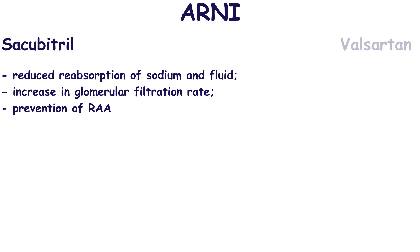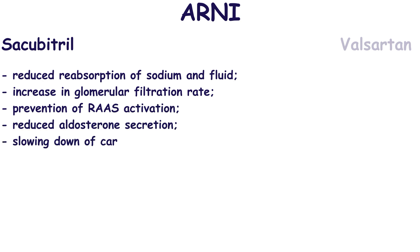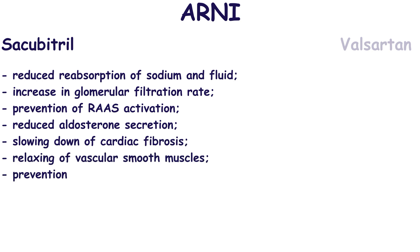Also, these peptides result in the dilation of afferent glomerular arterioles and constriction of the efferent glomerular arterioles, leading to an increase in glomerular filtration rate. Natriuretic peptides inhibit the secretion of renin, resulting in the prevention of activation of the renin-angiotensin-aldosterone system. This leads to the reduction of aldosterone secretion. Aldosterone causes the reabsorption of sodium and water into the blood and secretion of potassium into the urine. Natriuretic peptides also relax vascular smooth muscles in the arterioles and venules, and prevent ventricular hypertrophy.